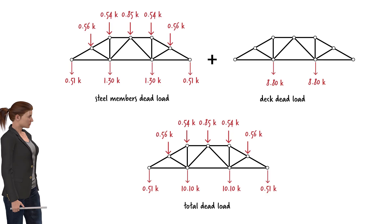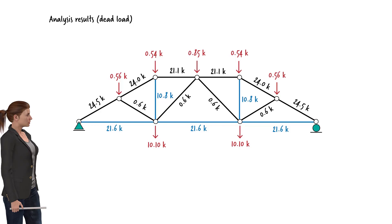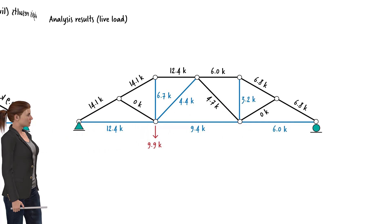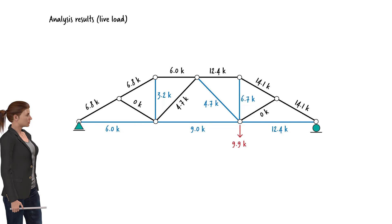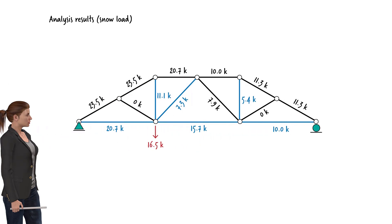The analysis of the truss under dead load results in the following member forces, with tension forces shown in blue. The truss is assumed to be simply supported. Under full pedestrian load, the following member forces develop. If only the left half of the truss is loaded, the member forces change accordingly. Similarly, analysis is performed for snow load on the entire deck, on the left half only, and on the right half only.